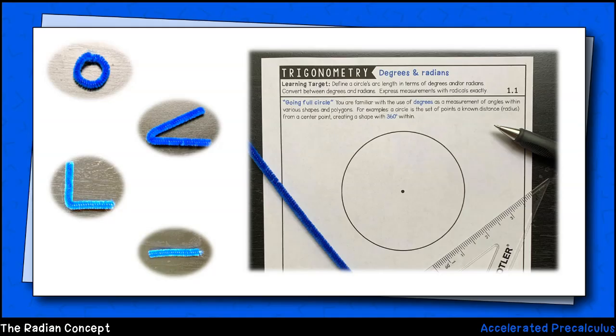You are no doubt familiar with the concept of degrees. For example, there are 360 degrees in a circle, acute angles are less than 90 degrees, a right angle is exactly 90 degrees, and a straight line is 180 degrees.